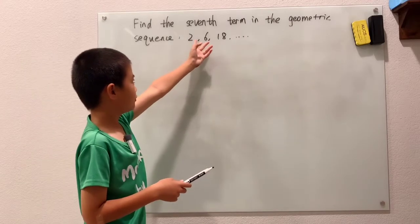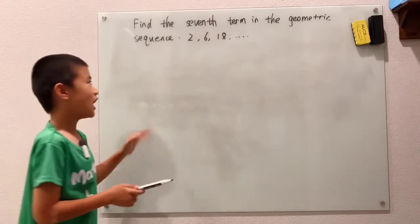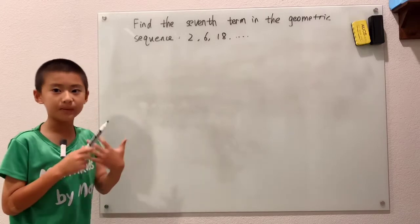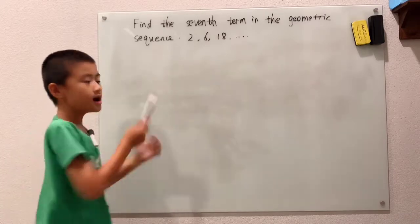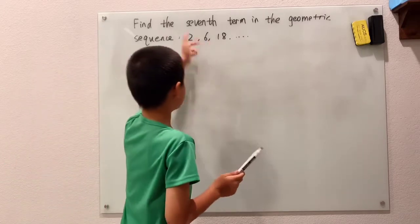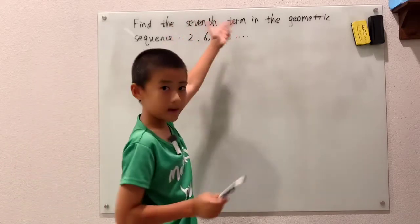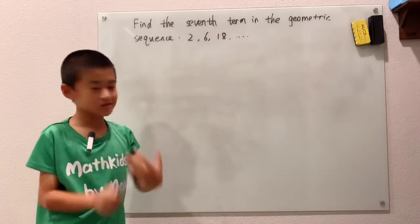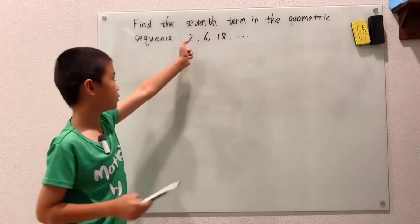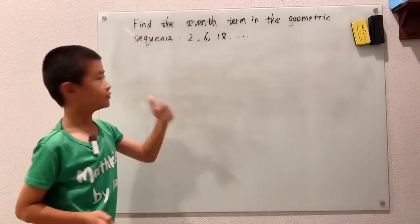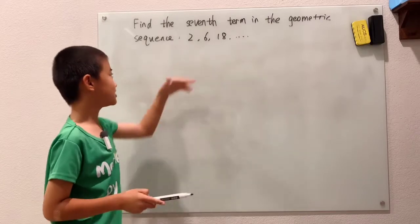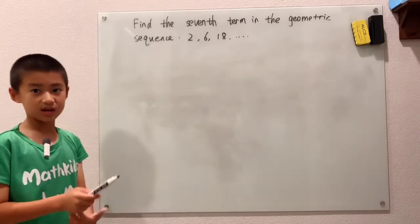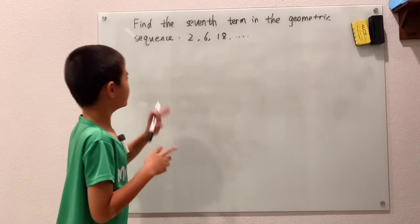Let's get back to the problem. First, find the pattern. It's a lot like finding the common difference in an arithmetic sequence. Here, you find the pattern by seeing that we're multiplying by three every single step of the way: two times three is six, and six times three is eighteen.